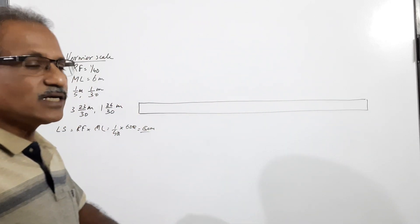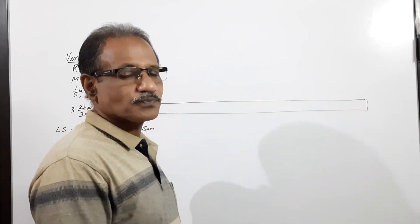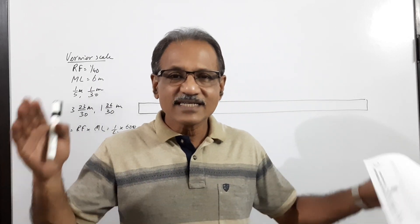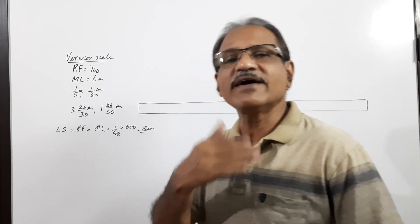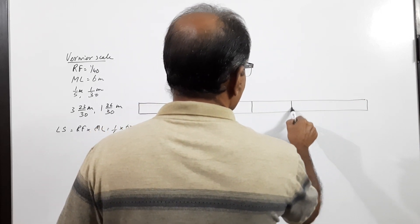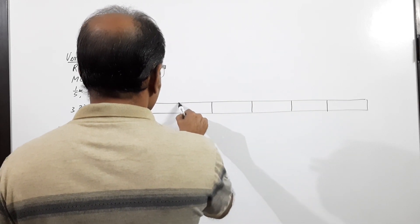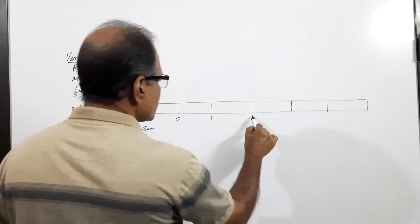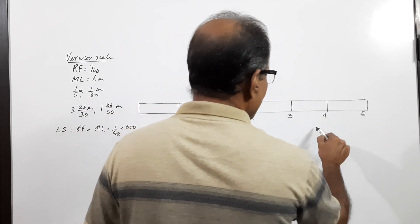I draw a rectangle one centimeter wide and 15 centimeters long. This 15 centimeters represents the maximum length of 6 meters. So I divide it into 6 equal parts, labeling 0, 1, 2, 3, 4, 5 — the unit being meters.